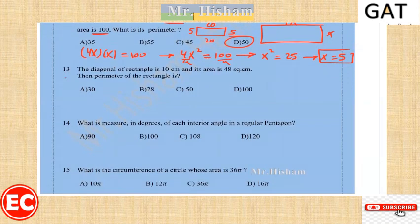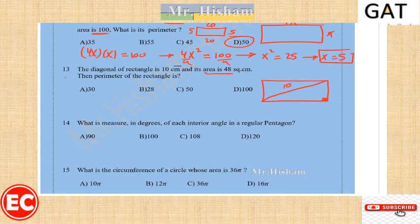Question thirteen: the diagonal of a rectangle is 10 and its area is 48. Area equals length times width. The numbers that multiply to give 48 are 6 and 8, which form a well-known 6-8-10 right triangle. So the sides are 6 and 8, and the perimeter is 6 + 8 + 6 + 8 = 28.